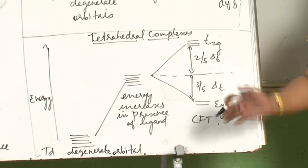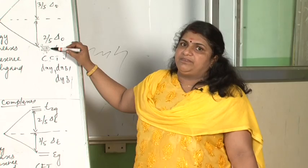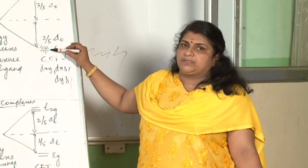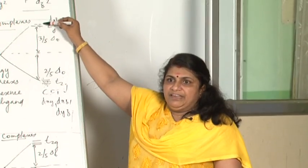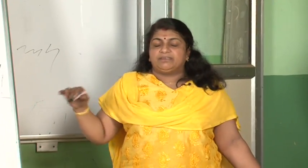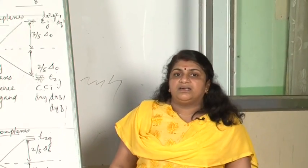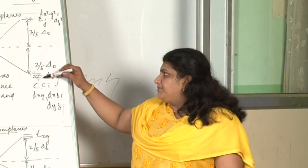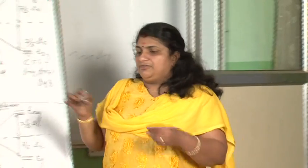Color also can be explained this way. When electrons are here, electrons absorb any radiation from the electromagnetic spectrum or visible spectrum and jump from this d to this d. When the electron comes back, it emits the color complement - it emits the color which it has absorbed. So the transition metal complexes are colored due to d-d transition from this d to this d.